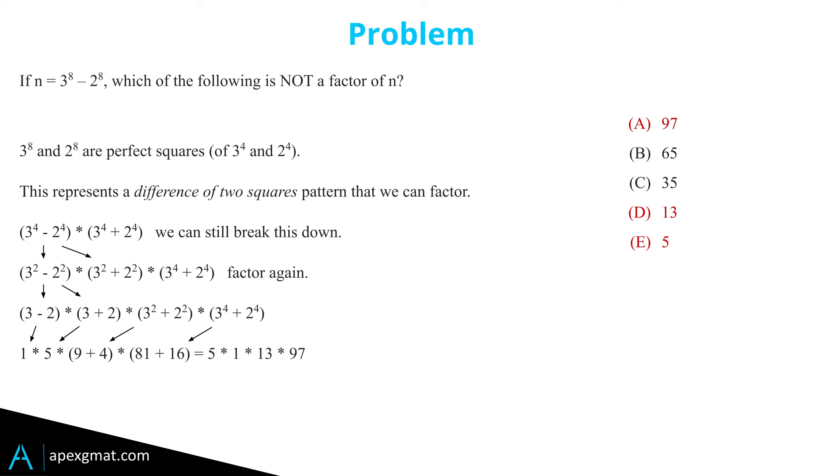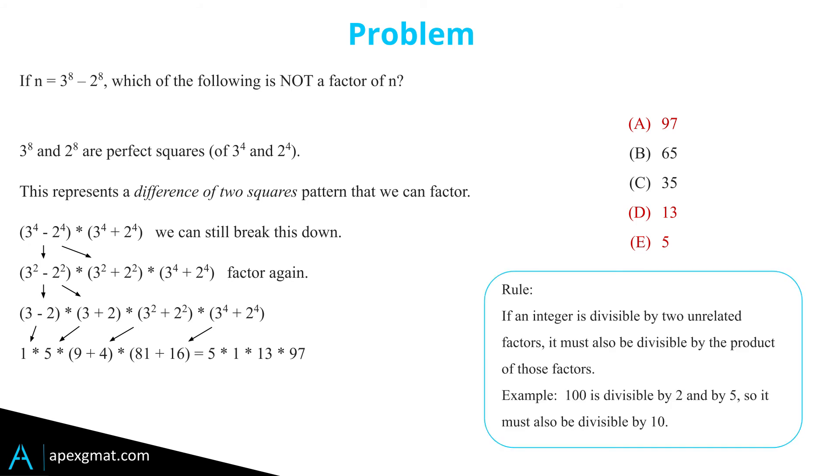Since we have factors of 5 and 13, 65 must also be a factor because it's comprised of a 5 and a 13. 35 requires a 7. We don't have a 7 anywhere. So the correct answer choice is C, 35.